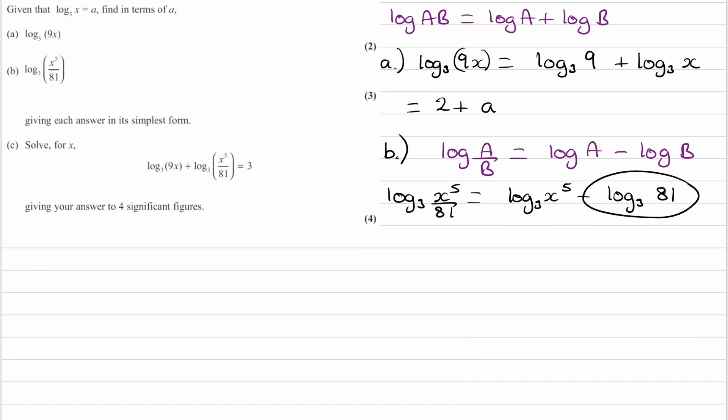So then the second term that we have here, that's just going to be 4 as 3 to the power of 4 is 81. And the first term, remember that we're trying to get A in there. So A is equal to log to the base 3 of x. So then if we were to use the power rule, we can rewrite this as 5 log base 3 of x. That becomes minus 4. And then this becomes 5A minus 4.